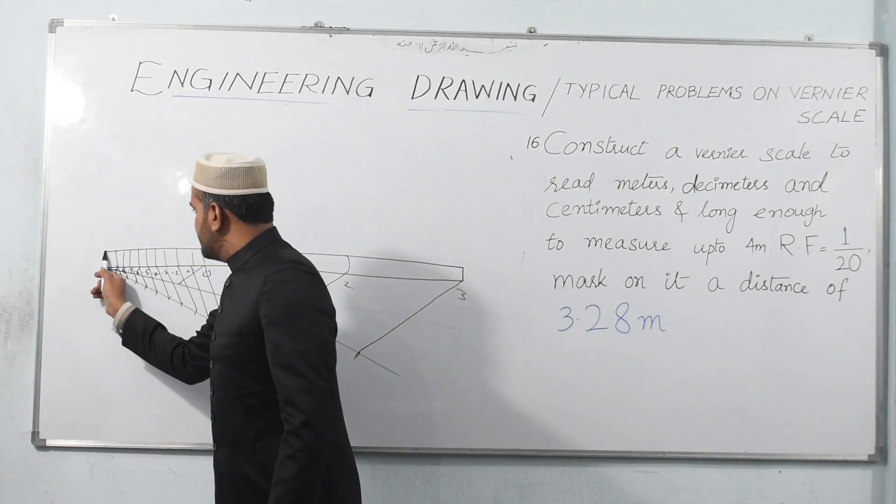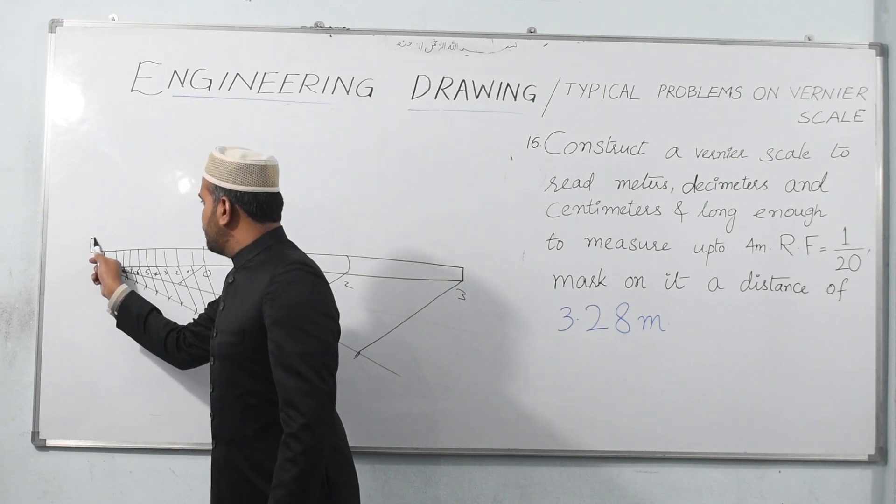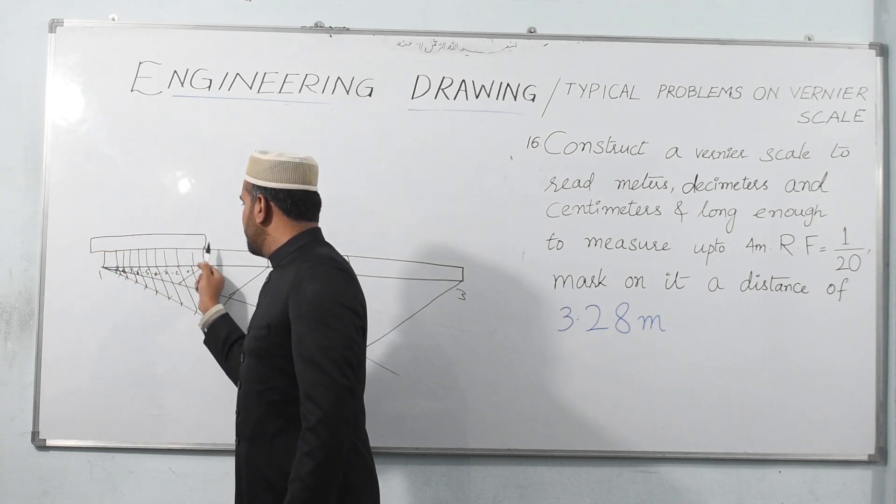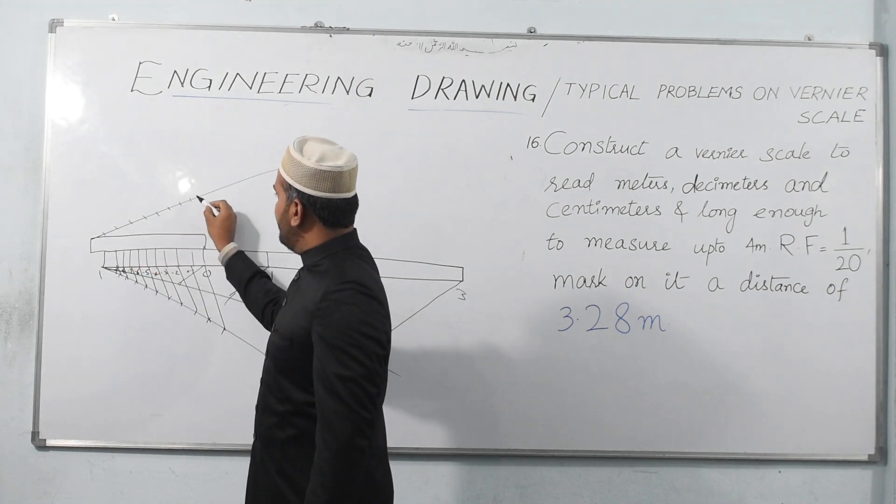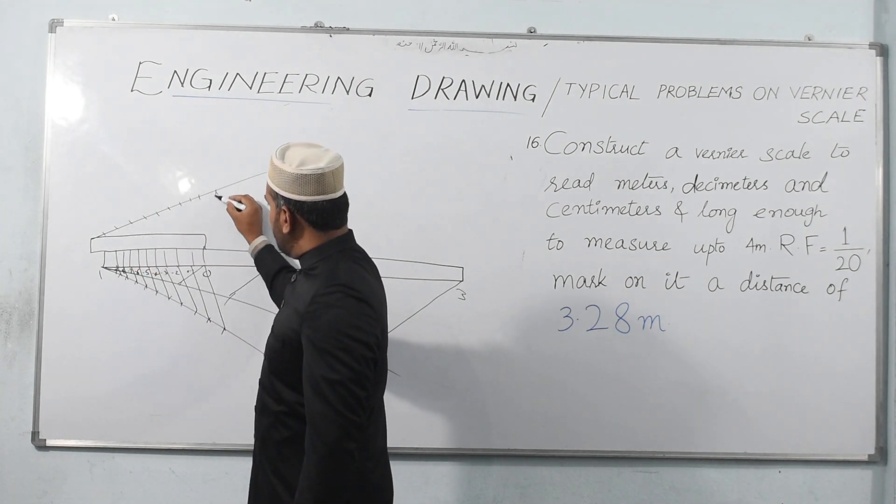Then again from here take this distance. Height is 5mm, angle is 20, ten parts: one, two, three, four, five, six, seven, eight, nine, and ten. From the last one to the last one.